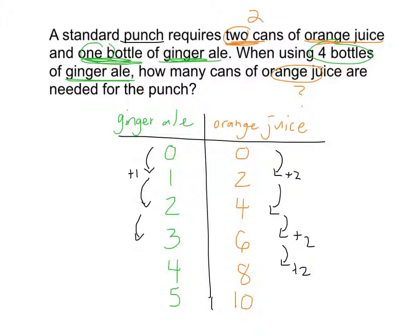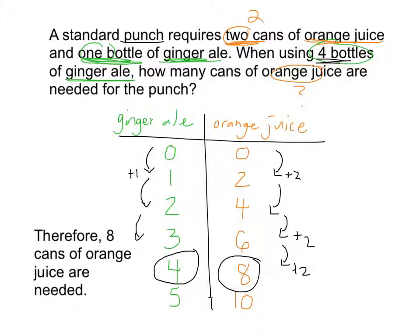Let's go back and see what this question was even asking us to find. The question said, when using four bottles of ginger ale, how many cans of orange juice do we need? Do you see that information on our table? Where do you see four bottles of ginger ale? That's correct, right here. When we had four bottles of ginger ale, how many cans of orange juice do we need? Eight. So we've answered the question. Therefore, eight cans of orange juice are needed.